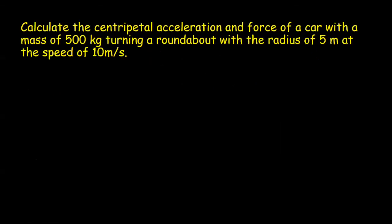Let's look at one simple example. Calculate the centripetal acceleration, so we need to calculate ac, and force, so we need to calculate Fc of a car with mass of 500 kg, so M is 500 kg, turning a roundabout with radius of 5 meters, so R is 5 meters, at the speed of 10 meters per second. V equals 10 meters per second.